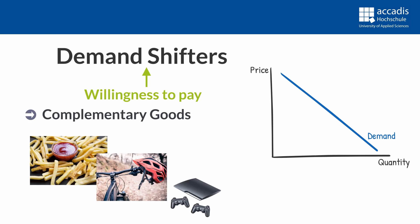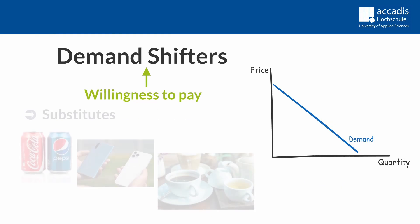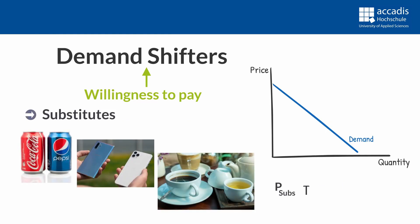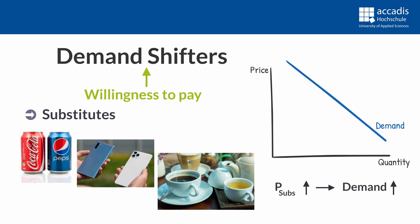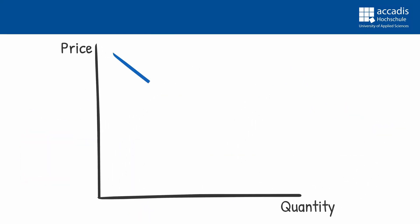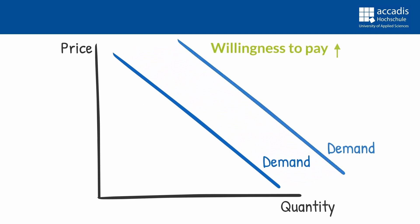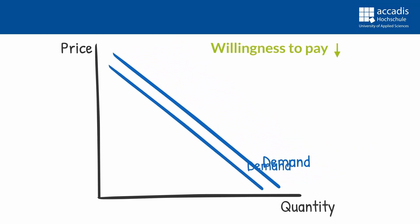If the price of a complement increases, willingness to pay for the given product will be lower. People demand less PlayStation games if they cannot afford or do not want to afford the console. And on the other hand, if the price of a substitute increases, people will switch to the alternative - so if Coke becomes more expensive, demanders will want to buy more Pepsi. All these changes will be represented by a shift of the demand curve, either up and to the right if willingness to pay increases, or down and to the left if it decreases.